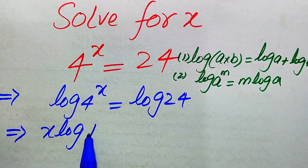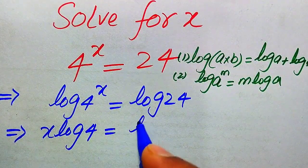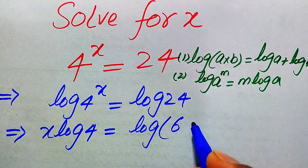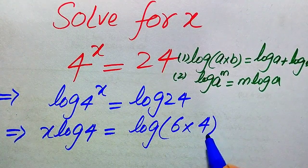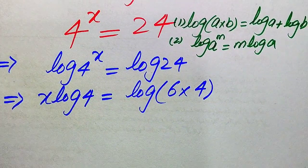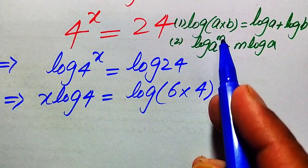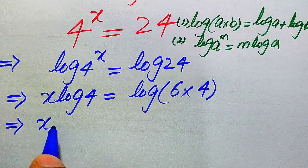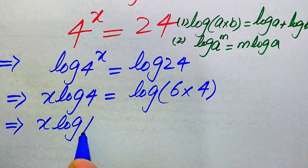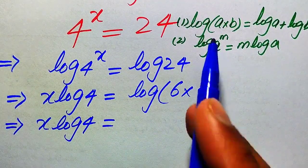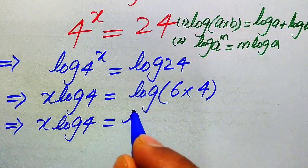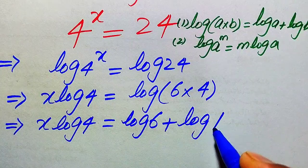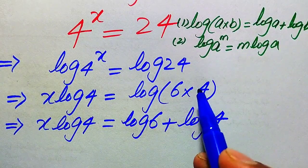It becomes x times log 4 equals log of 24. We write 24 as 6 times 4, so on the right-hand side we use the first property of log. It is written as x times log 4 equals — we apply this log separately on both terms and add them.